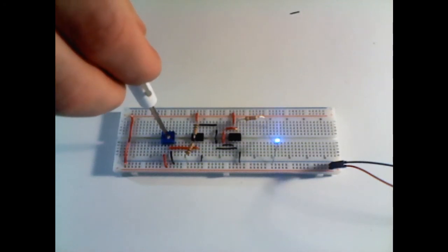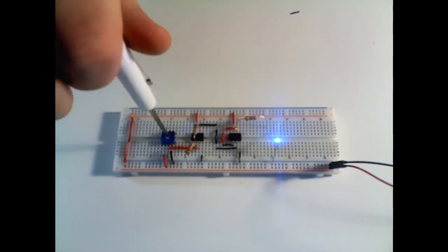So right now what I'm doing is just varying the potentiometer to show that when the input signal changes, the output signal will change as well.